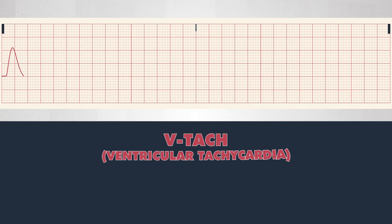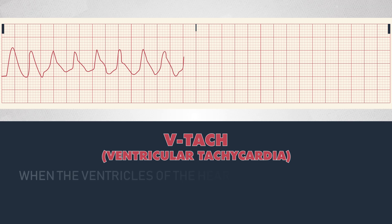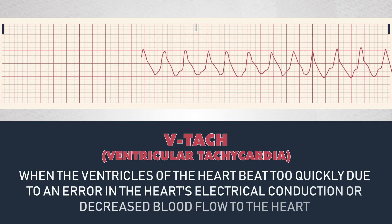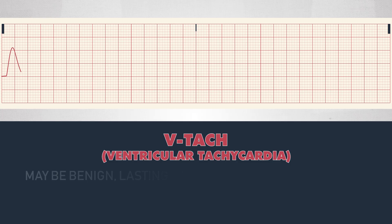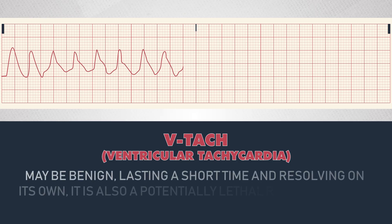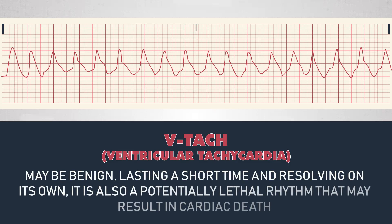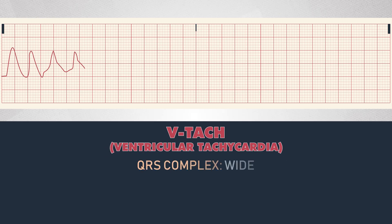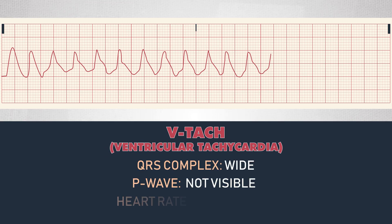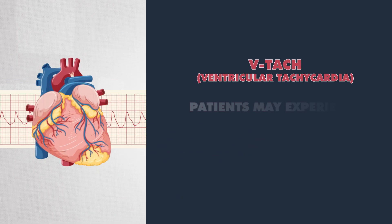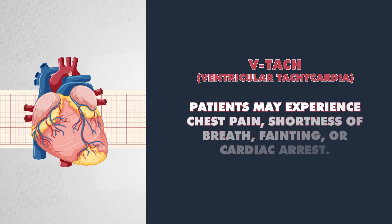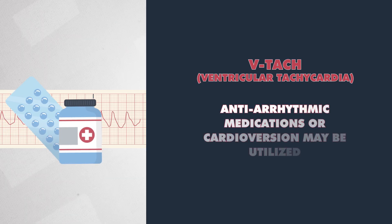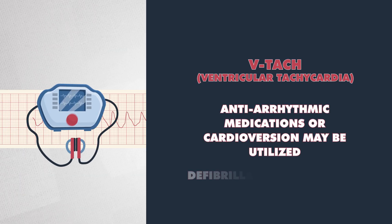Then we have VTAC, or ventricular tachycardia. This is caused when the heart beats too quickly and the heart's electrical conduction and blood flow is decreased to the heart. While VTAC is usually benign and lasts for a short time and usually resolves on its own, it is also a potentially lethal rhythm that can result in cardiac death. The strip will show a wide QRS complex, no P wave, and a heart rate greater than 100. These patients experience chest pain, shortness of breath, fainting, or cardiac arrest. Anti-arrhythmic medications or cardioversion may be utilized.